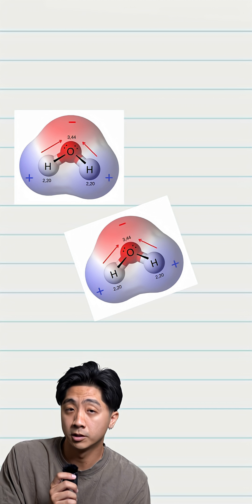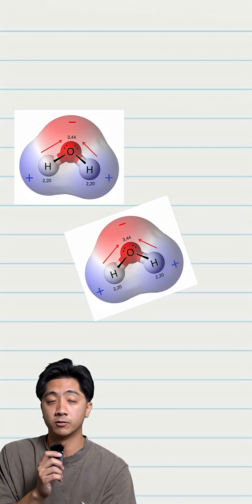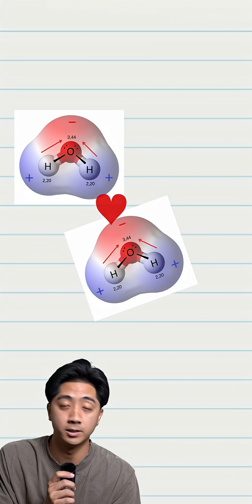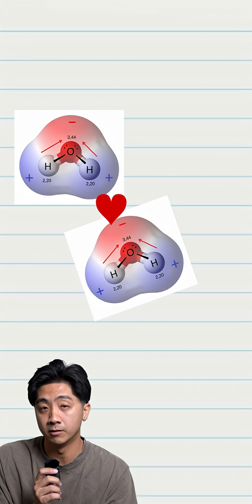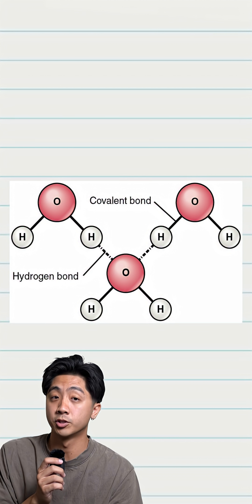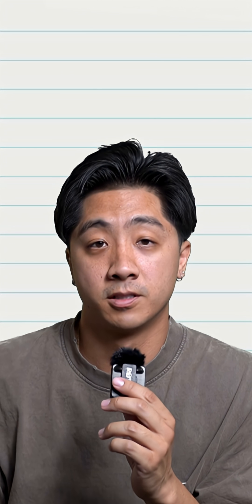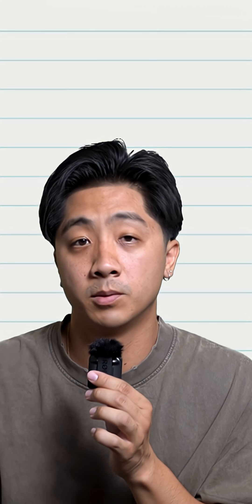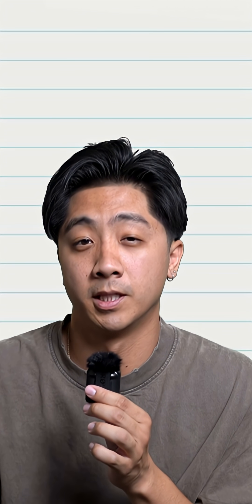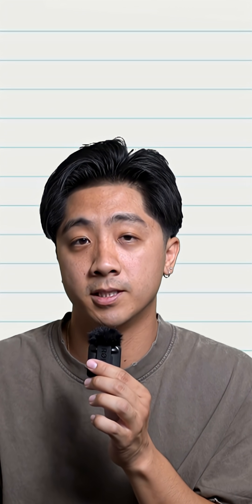When you put two polar molecules together, the positive side of one molecule will be attracted to the negative side of the other molecule. This is known as a hydrogen bond. And that's everything you need to know for this topic. These are meant to be reviewed, so if you need a more in-depth explanation, find me on YouTube where I go into more detail.